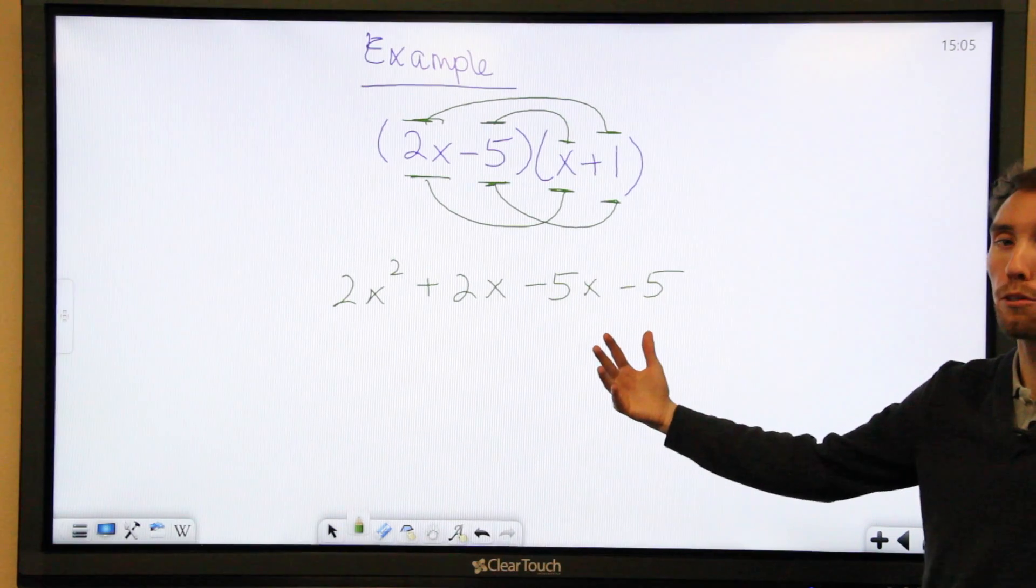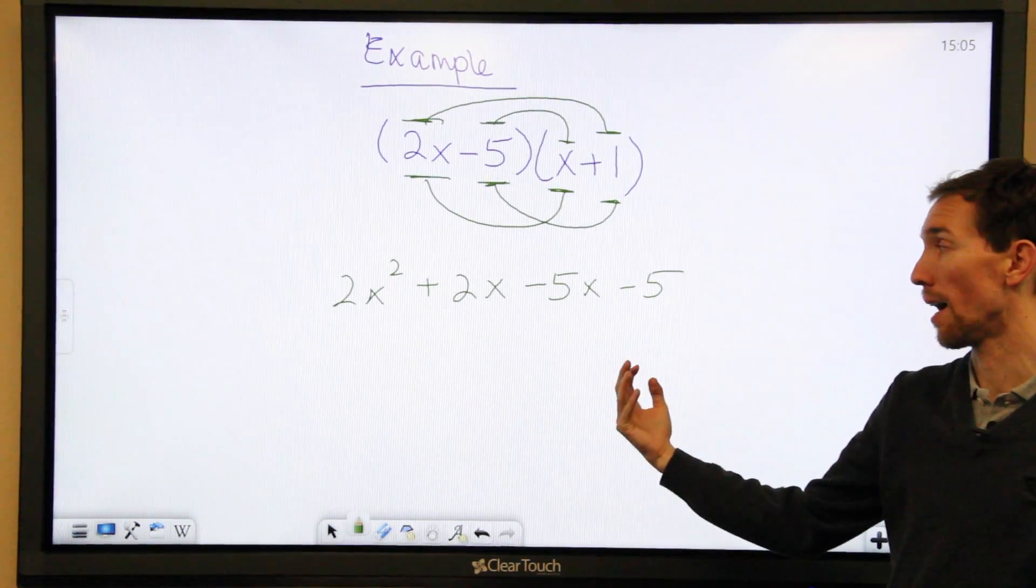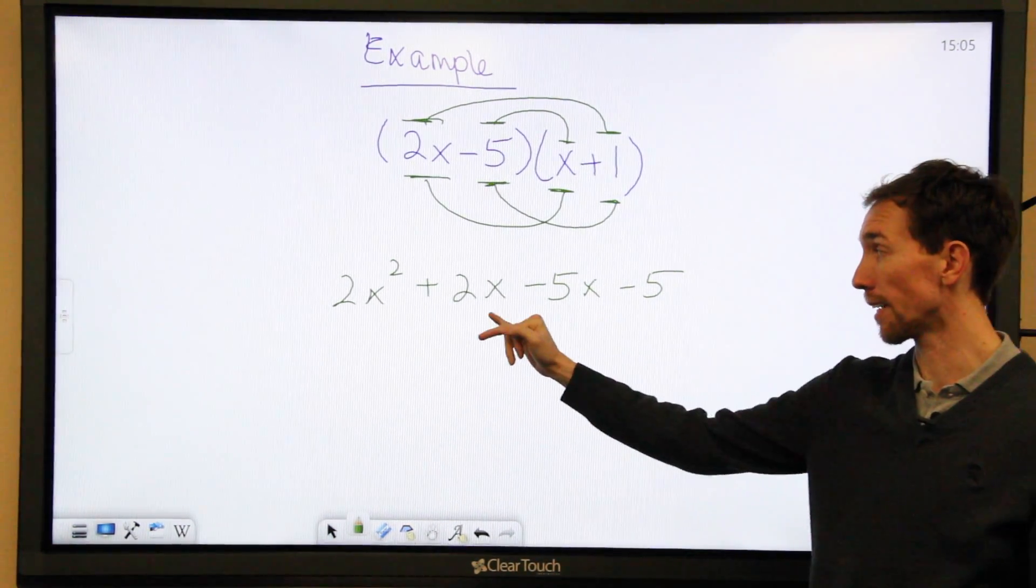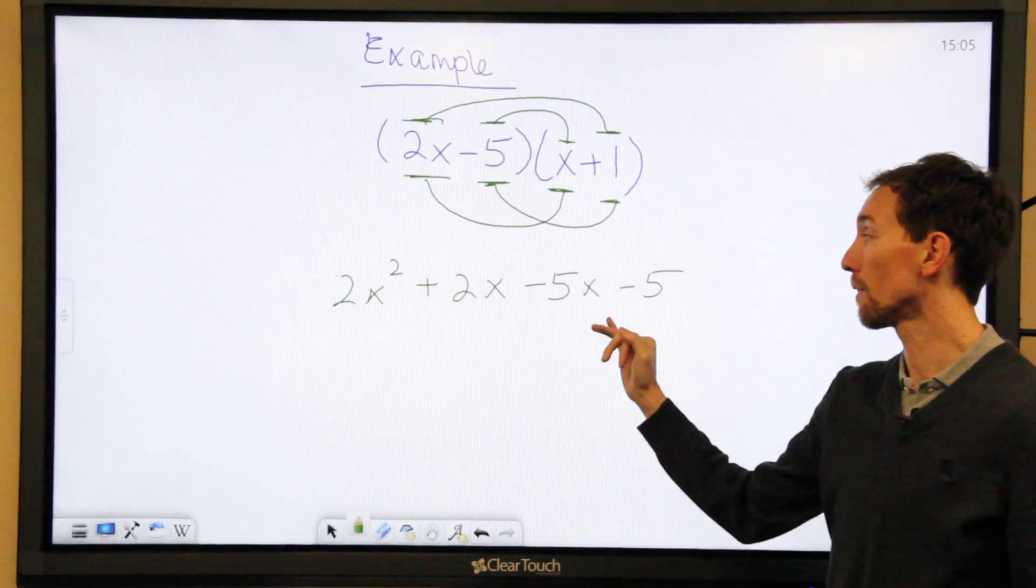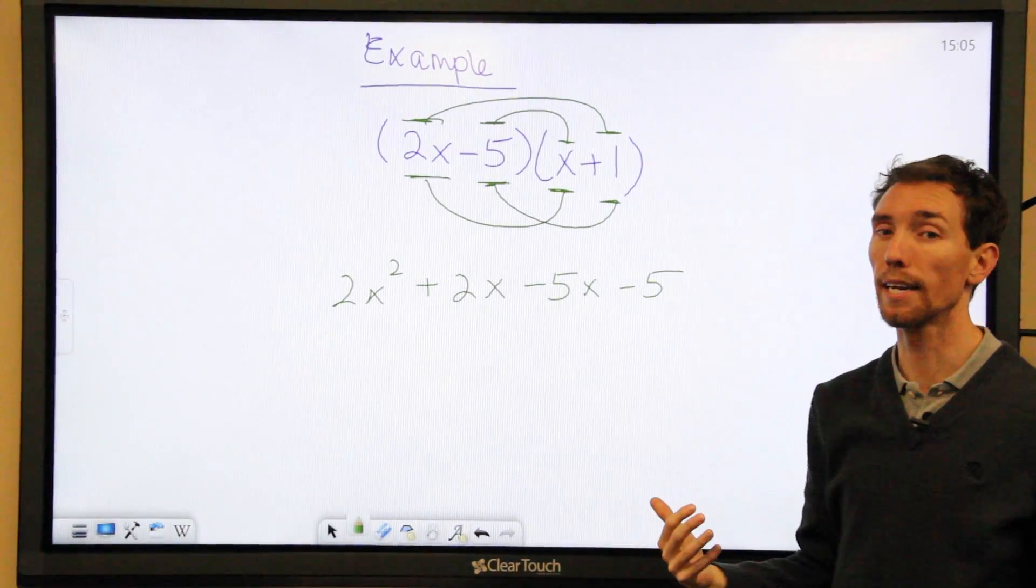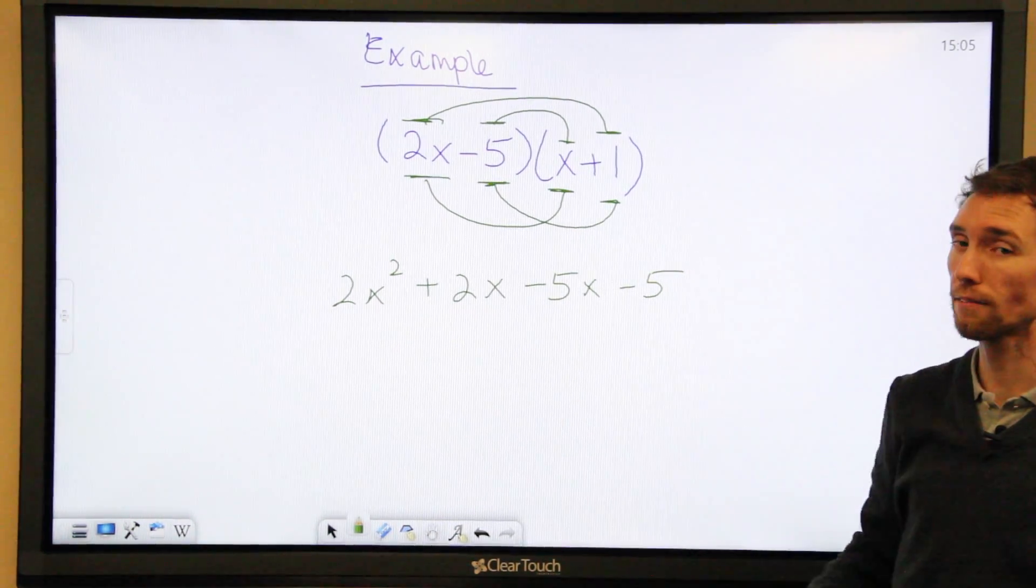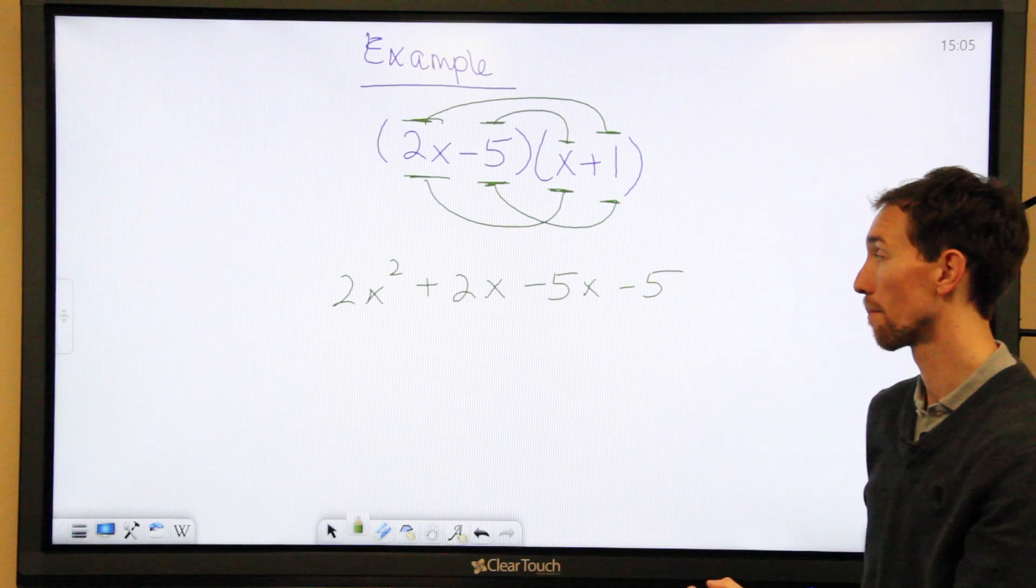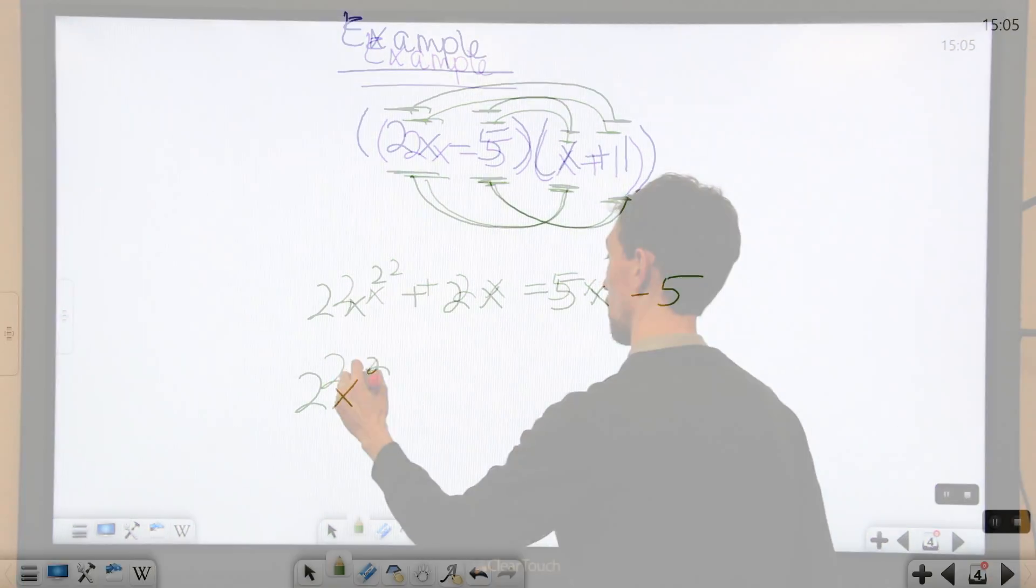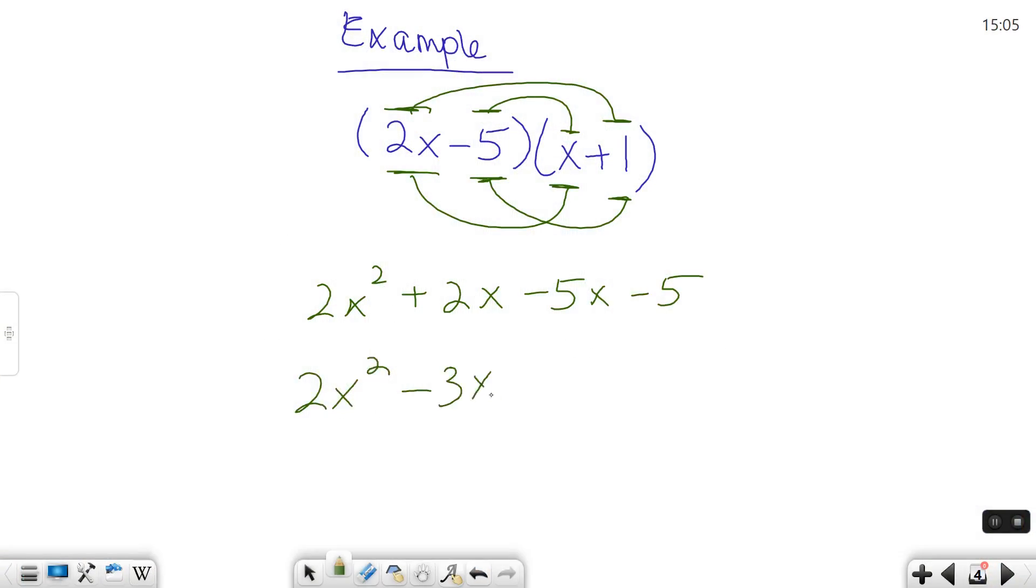The next thing you want to do is look for like terms. Combine like terms. And in this case, just like the last one, and really all of them you do, your middle terms are going to be like. So we can combine those. We have positive 2 minus 5, which is negative 3. So 2x squared minus 3x minus 5. This is our simplified final answer.